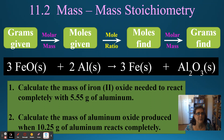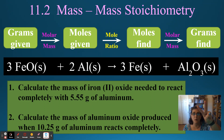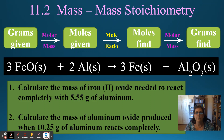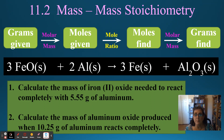Let's look at our first question: calculate the mass of iron two oxide needed to react completely with 5.55 grams of aluminum. So we have two chemicals — iron two oxide and aluminum. Iron two oxide would have iron and oxygen in it, so it must be FeO. We need to find grams of FeO needed to react with 5.55 grams of aluminum.